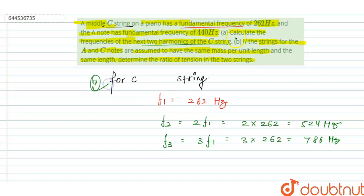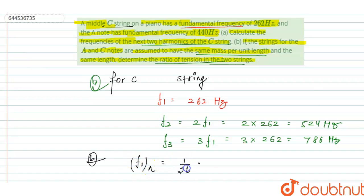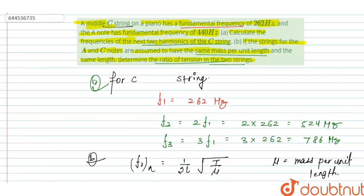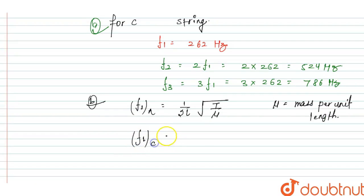For part (b), if the strings for the A and C notes are assumed to have the same mass per unit length, we use the formula: f1 = (1 / 2L) × √(T / μ), where μ is the mass per unit length and T is the tension in the string. Similarly, f1 for C equals (1 / 2L) × √(Tc / μ), where Tc is the tension in the C string.